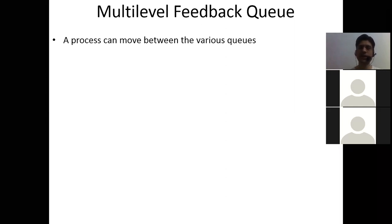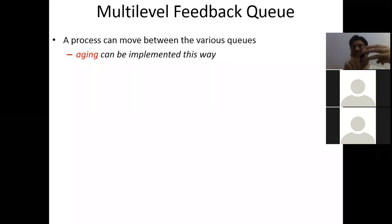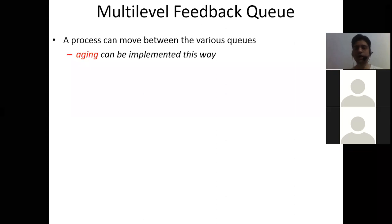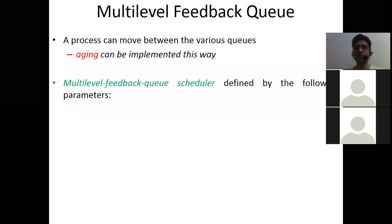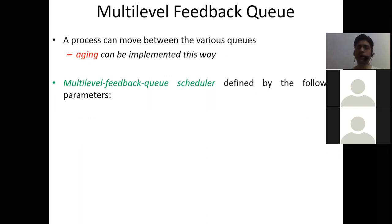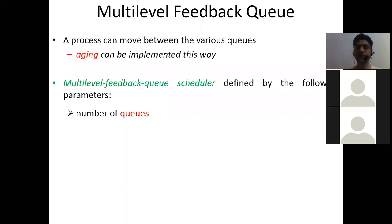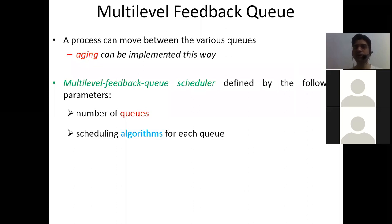This is how a process can move between various queues, and aging can be implemented in this manner. We are moving between priority queues — top priority, then low, then very low. We can move between these queues. A multi-level feedback queue scheduler is needed to implement this algorithm. It is defined by the following parameters — certain parameters are required to implement this multi-level feedback queue.